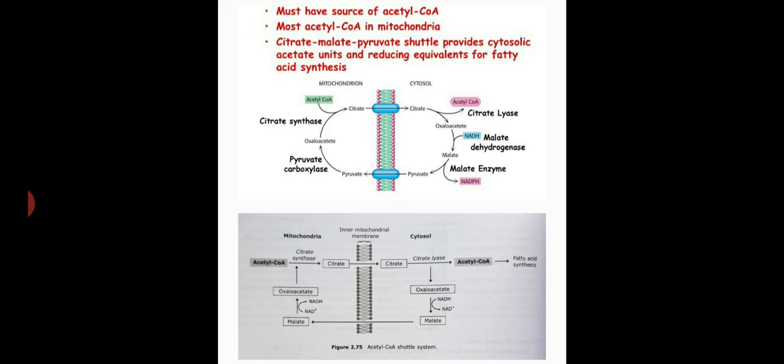Fatty acid synthesis in animal cells occurs in cytosol. It involves stepwise addition of 2-carbon units. The 2-carbon units are supplied by acetyl coenzyme A, which in turn is derived from the oxidation of glucose.